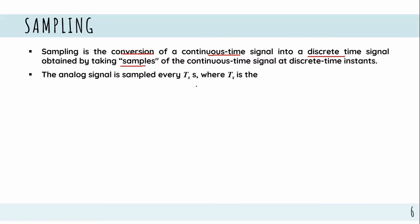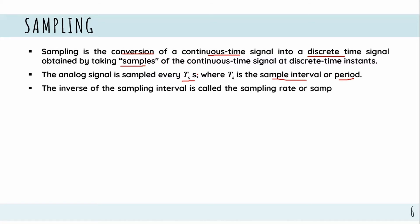Sampling occurs at a fixed time interval. We call this the sample interval, and at each interval we collect a value. The sampling rate or frequency is denoted as f_s, and the sample interval or period is T_s. The relationship is: f_s equals 1 divided by T_s.